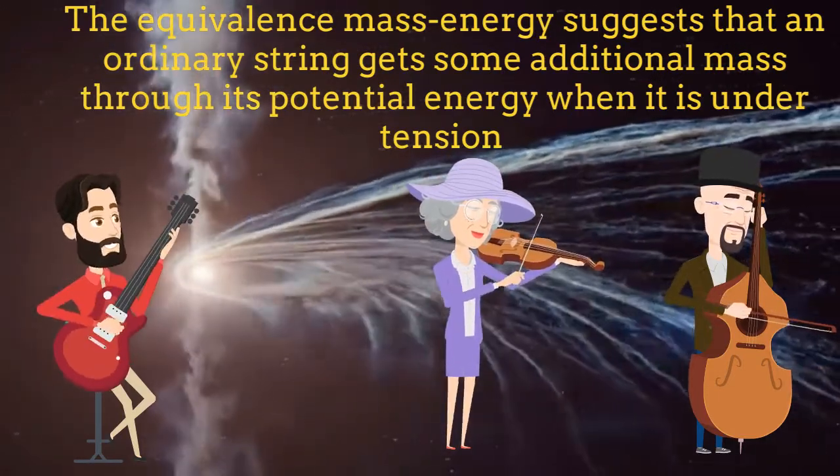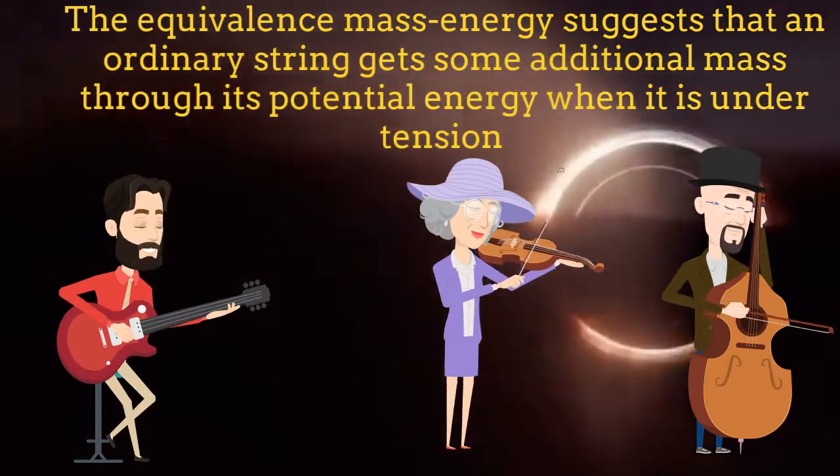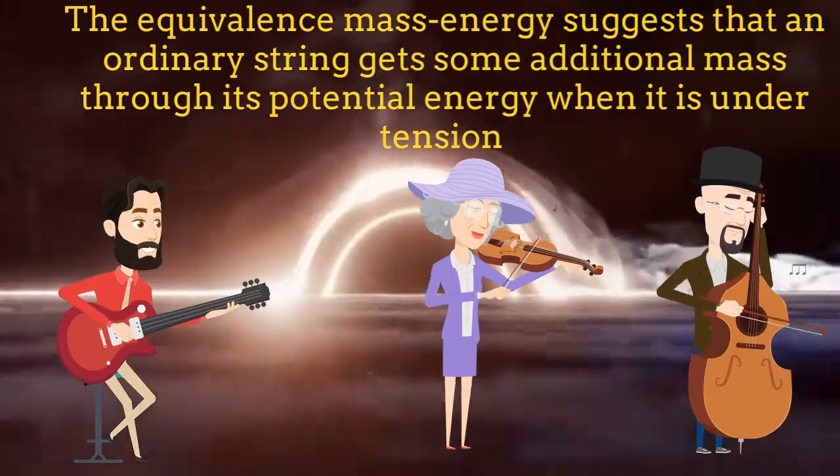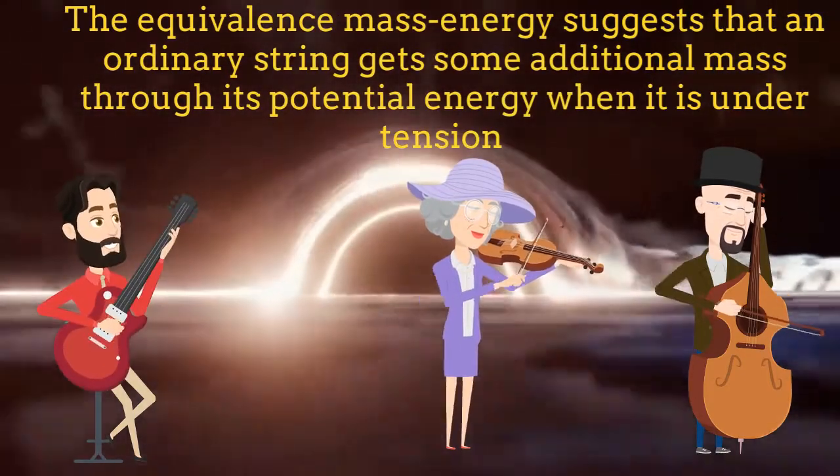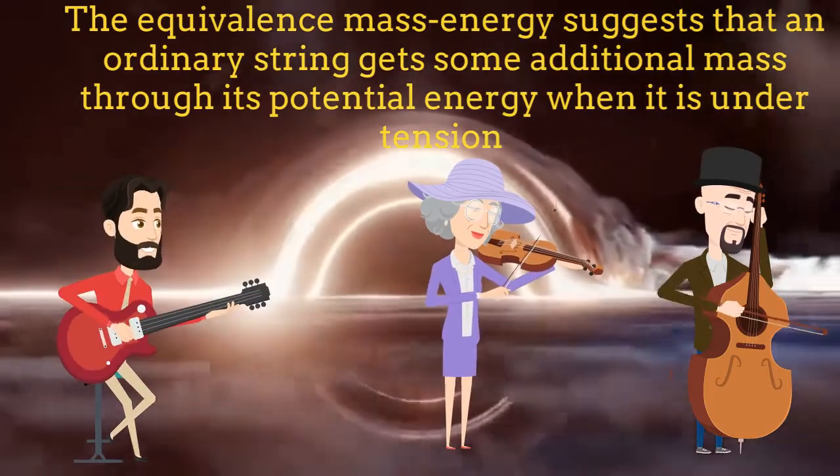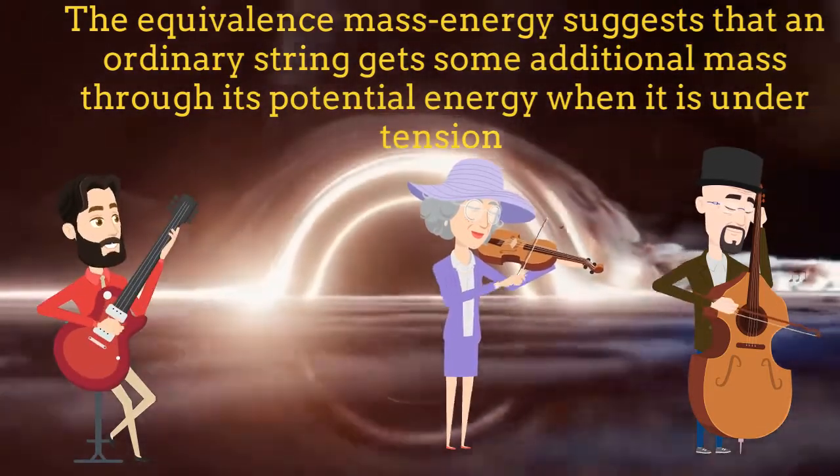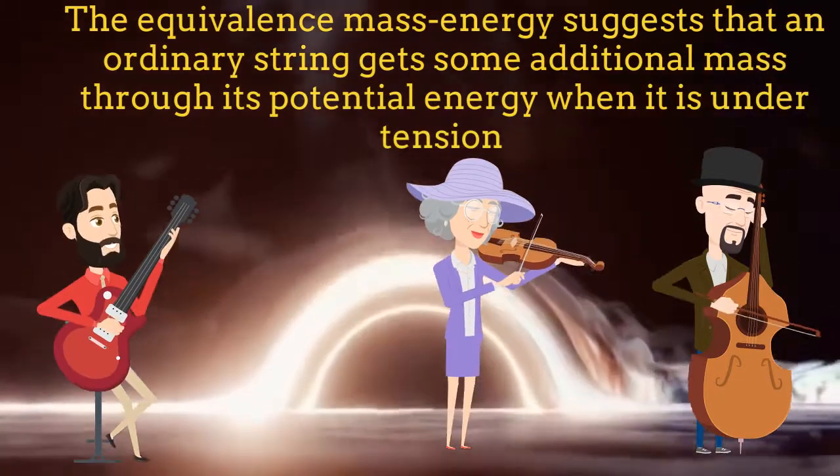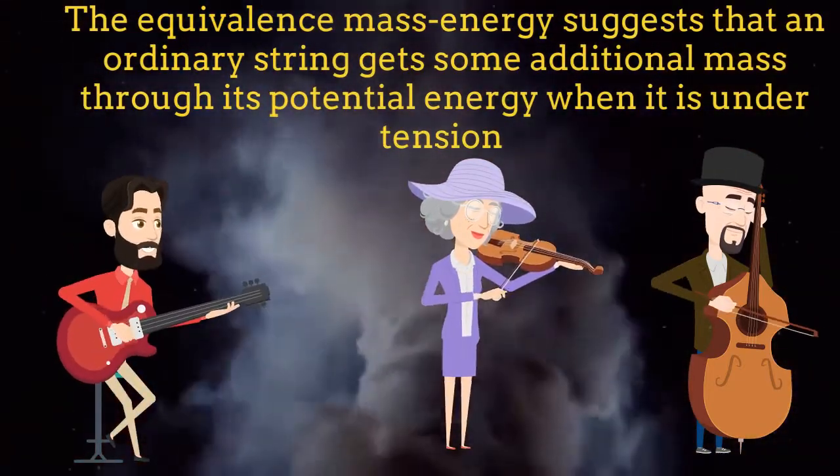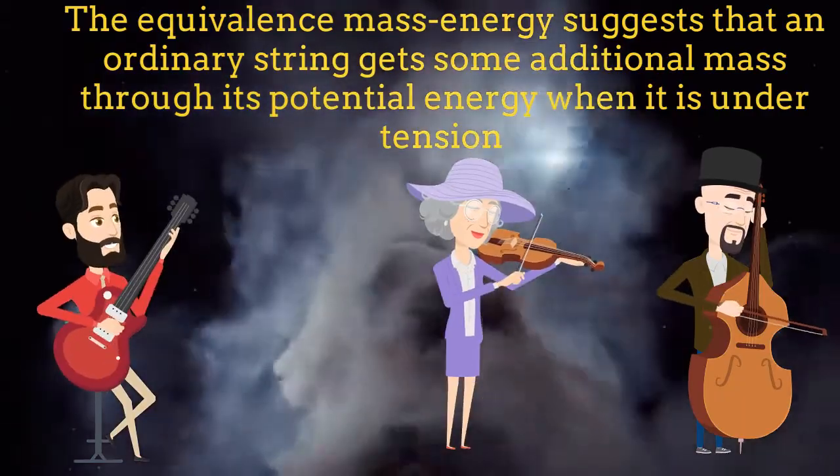The equivalence mass-energy, discovered by Einstein, suggests that the energy which the string gets due to its tension is just equivalent to an increase on its mass in an amount calculated via special relativity. If, for any reason, a stretched string in repose doesn't have any mass, then all its effective mass would be generated by the energy due to its tension.